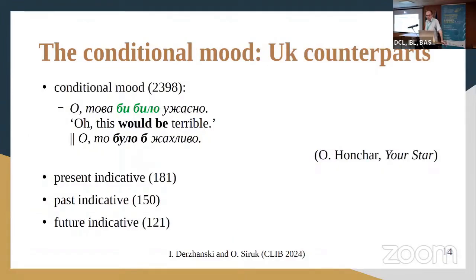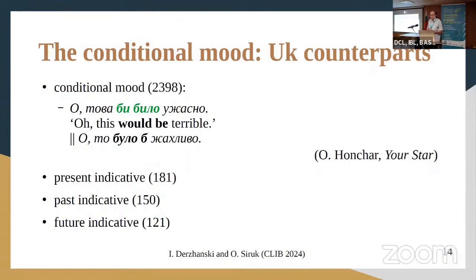The next most frequent verb is 'tryabvam', meaning 'be needed'. So these two modal verbs of possibility and necessity, followed by 'iskam' (want), followed by the copula, followed by the verb 'kazha' (say), and others which are less frequent. What are the Ukrainian counterparts? Most of the time it is the Ukrainian conditional mood. The next ones are more or less occasionally used: present indicatives, past indicatives, followed by future indicatives — so generally tenses of the indicative mood.